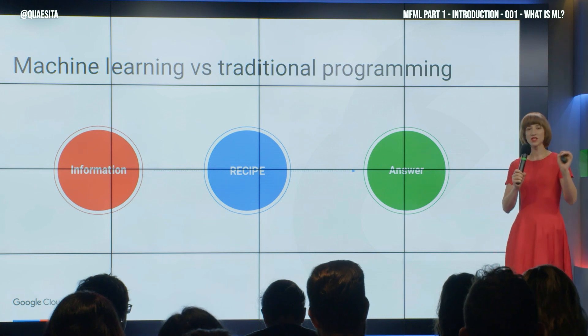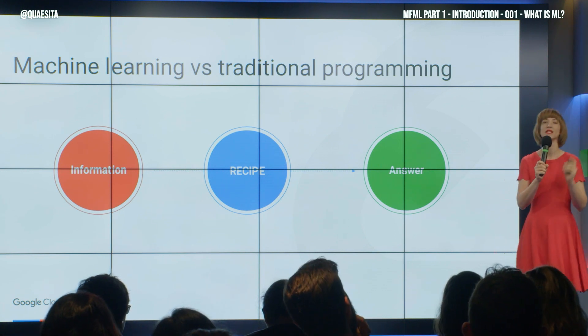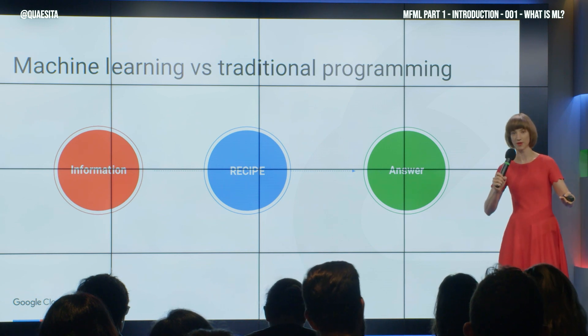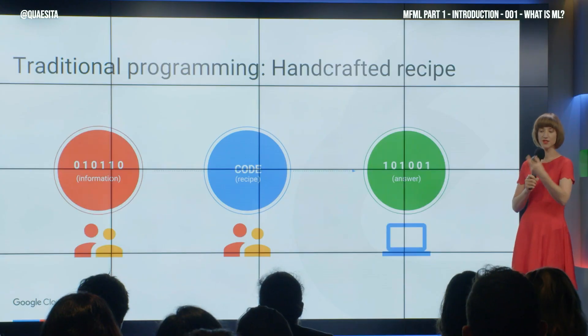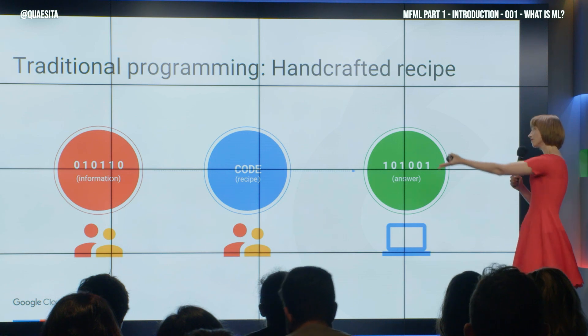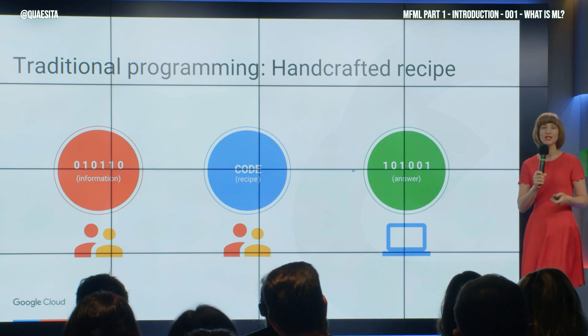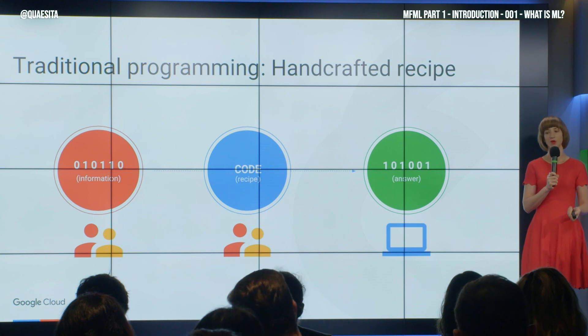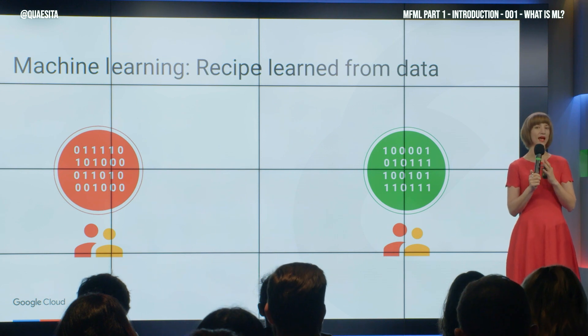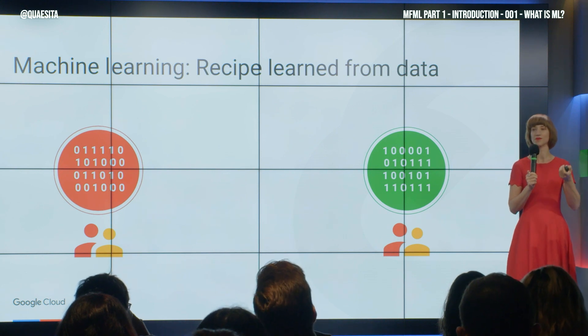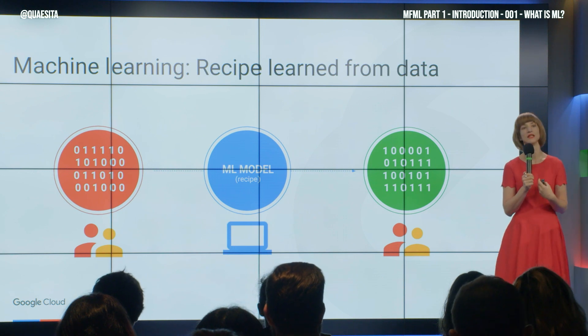And the difference between traditional programming and machine learning simply boils down to where that recipe comes from. In traditional programming, the human programmer must communicate with the universe, think deeply about the problem, channel divine inspiration, and handcraft that recipe as code that the computer will then use to convert data into outputs. In machine learning, we don't handcraft anything anymore. The programmer's task changes to feeding examples into the system, and it is the machine learning algorithm's job to stitch that recipe together out of the examples.